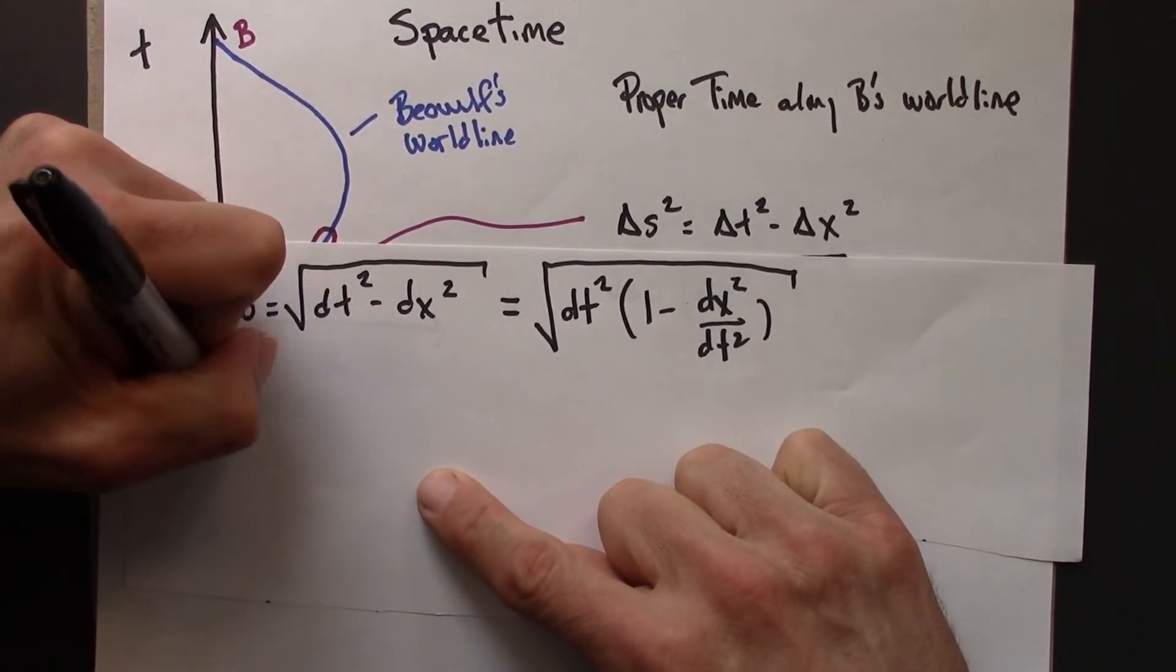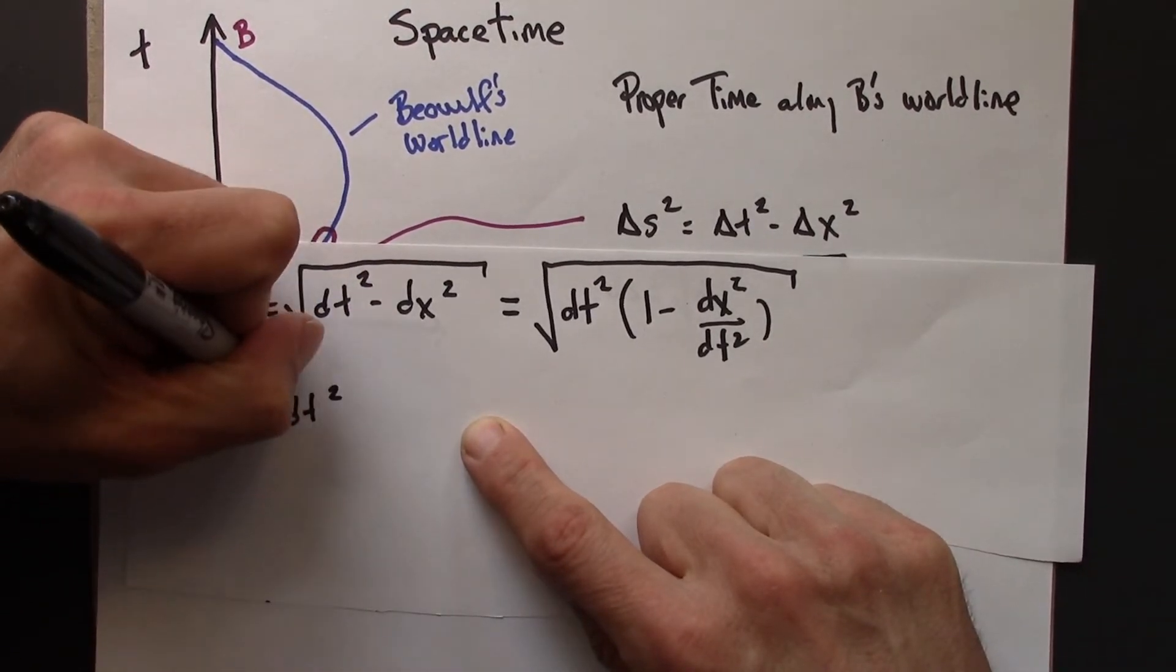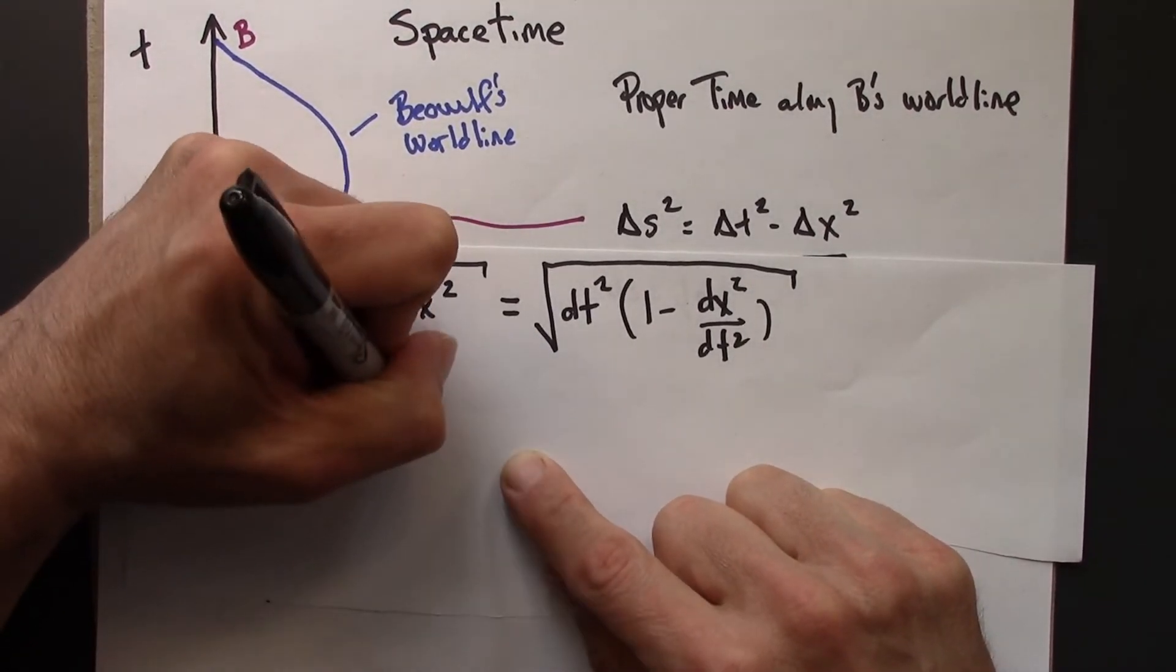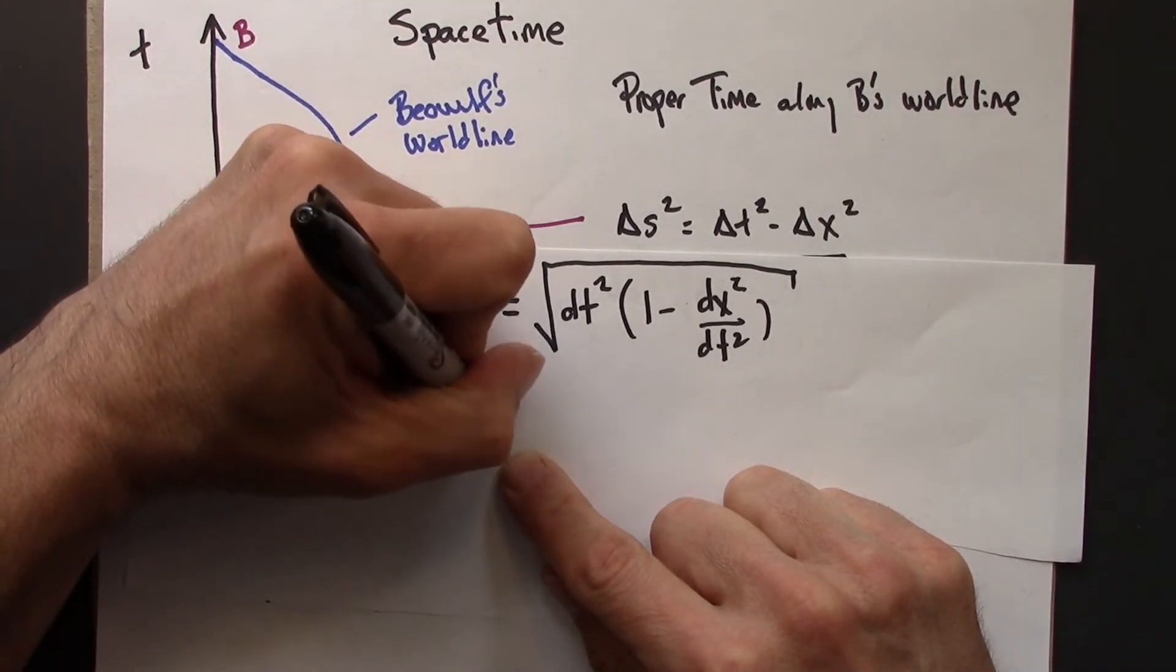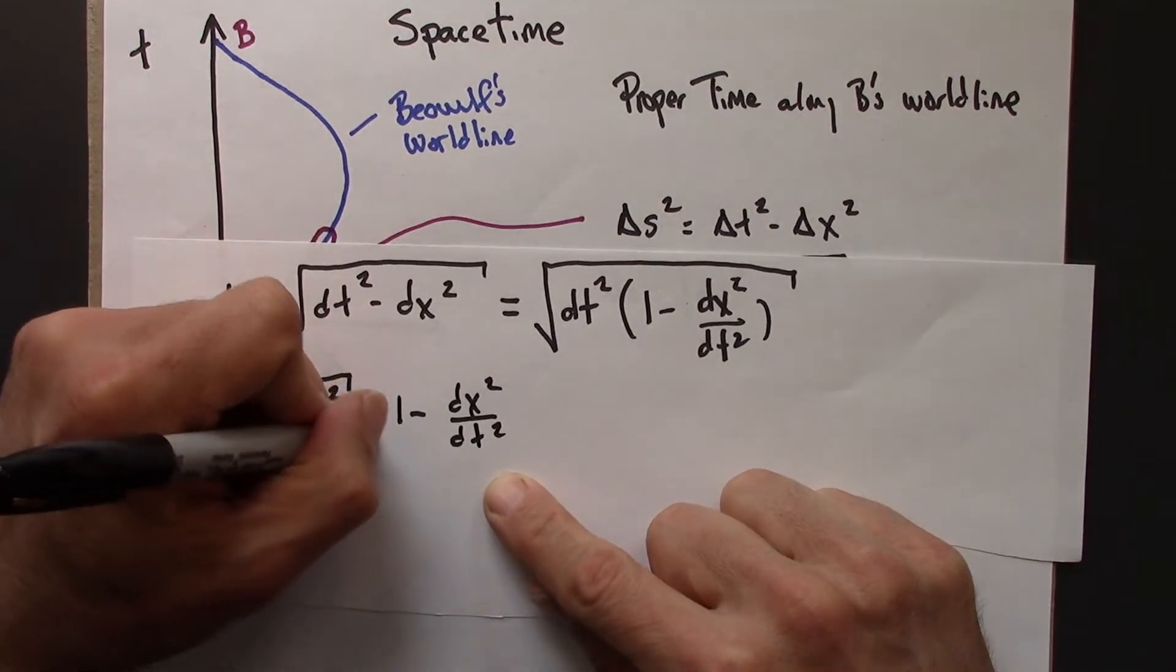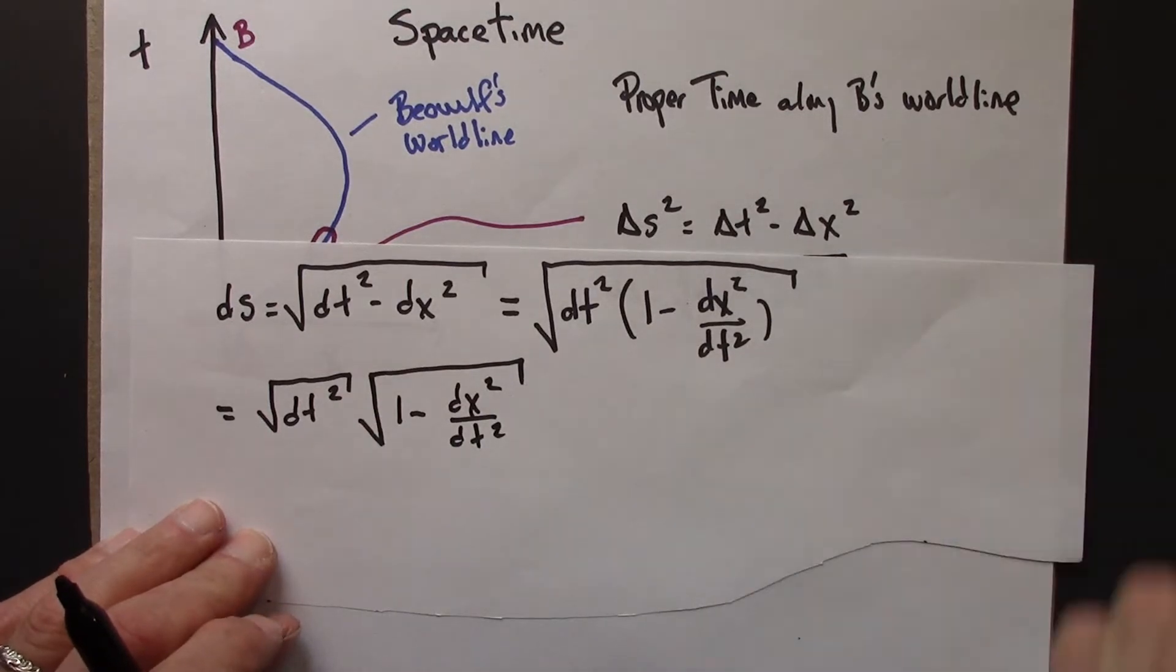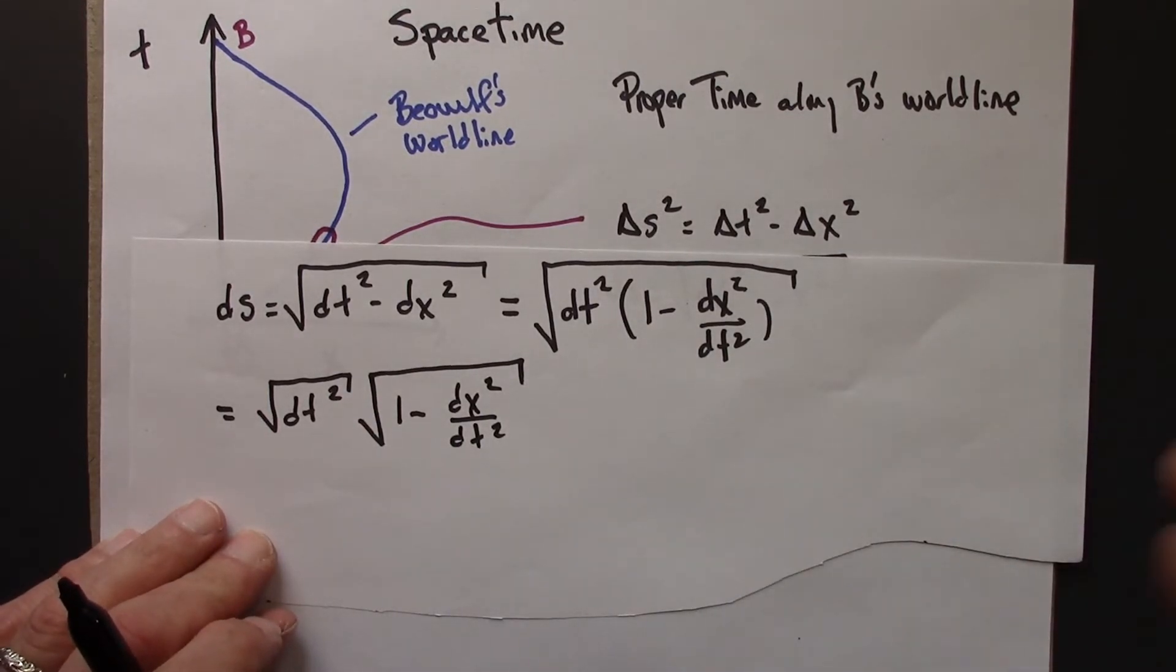I can then separate things under the square root sign like this. And dt squared square root, that just turns into dt.